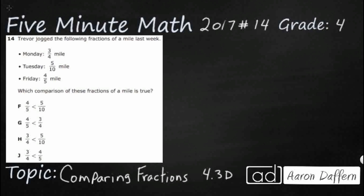If you have not done so already, please go ahead and take a moment to pause the video, work this problem out on your own, unpause it, and then we will look at our answers together. Trevor jogged the following fractions of a mile last week: 3 quarters, 5 tenths, 4 fifths. We need to compare these, and one of them is going to be true, which means three of these are going to be false.